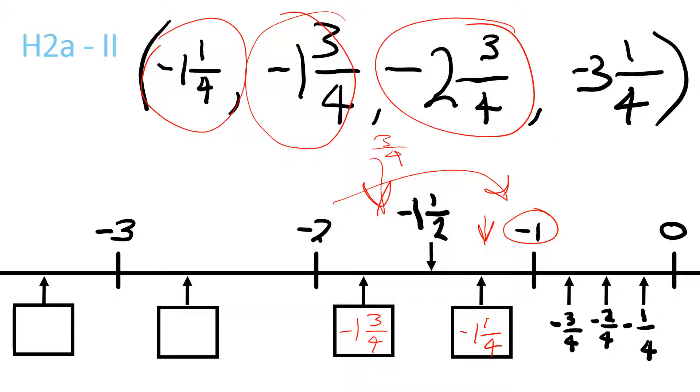Negative 2 and 3 quarters would go here because it's the only one with a minus 2 at the beginning, and then minus 2 is here, so minus 2 and 3 quarters.